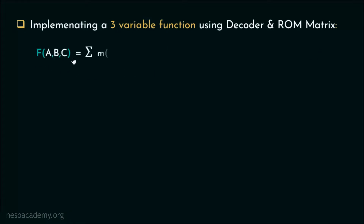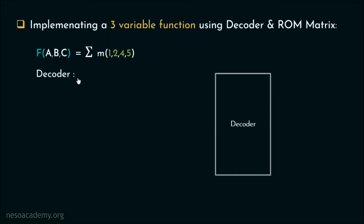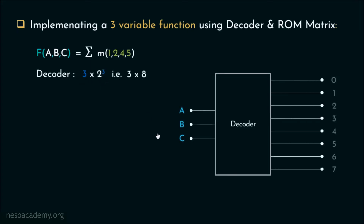Suppose this is the function that we are going to implement. As we can observe, it's given in its SOP or sum of products form — the summation symbol at the beginning gives it out. This particular Boolean function involves three variables A, B, and C. Therefore, we will need a decoder of configuration 3 by 2³, that is a 3-by-8 decoder, which has three input lines and eight output lines starting from 0 to 7, representing all the different minterms obtainable using three variables.